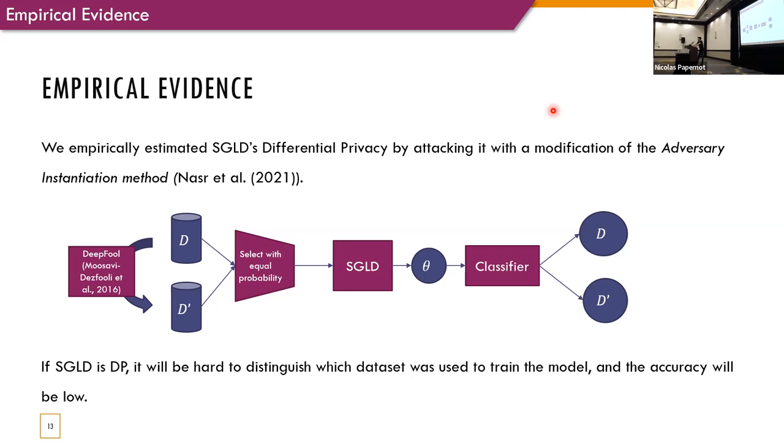Okay, so we finished with the analytical part. Now, let's move to the empirical evidence. So, we wanted to understand whether SGLD can provide the differential privacy for more complex models. So, we empirically estimated the differential privacy it gives by attacking it with a modification of the adversary instantiation method by Nassar and others.